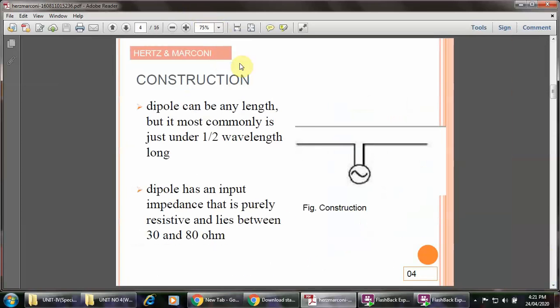Regarding its construction, the dipole can be any length, but most commonly is just under half the wavelength long. The dipole has an input impedance that is purely resistive, lying between 30 to 80 ohms.